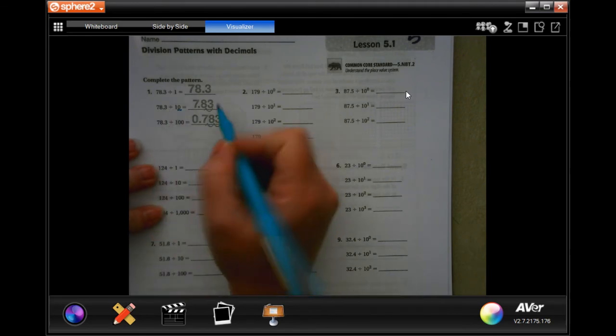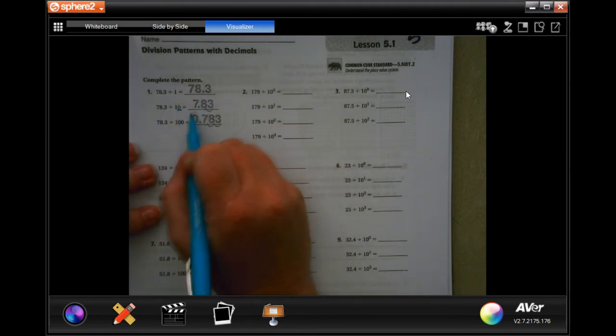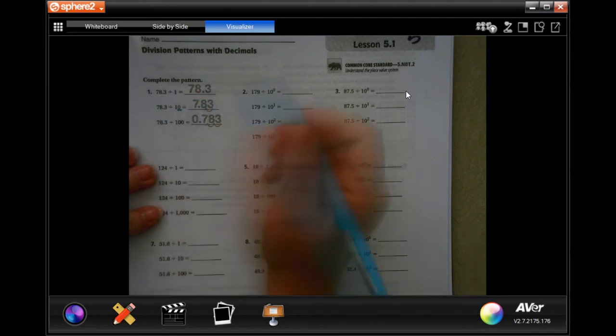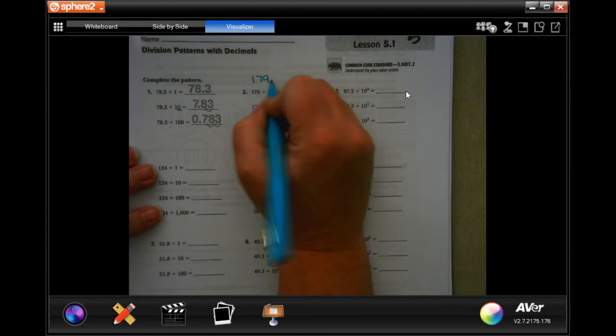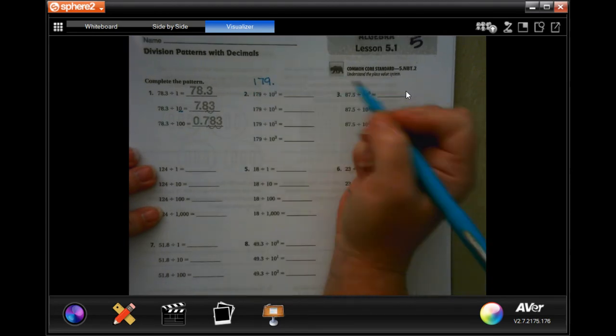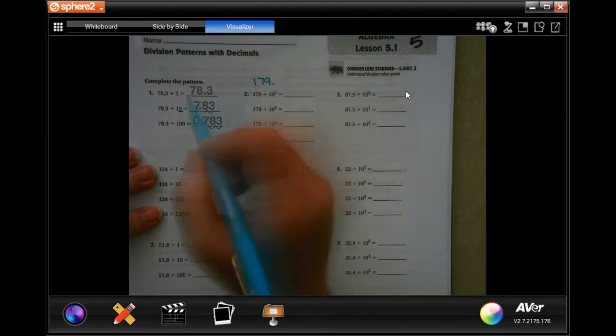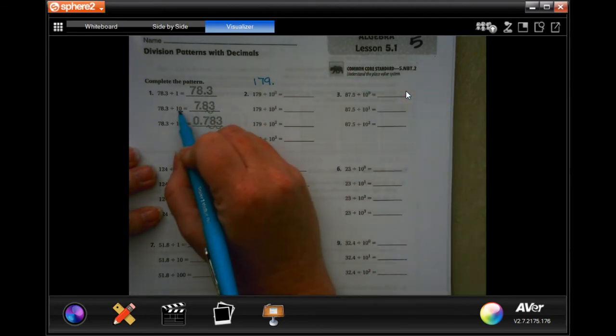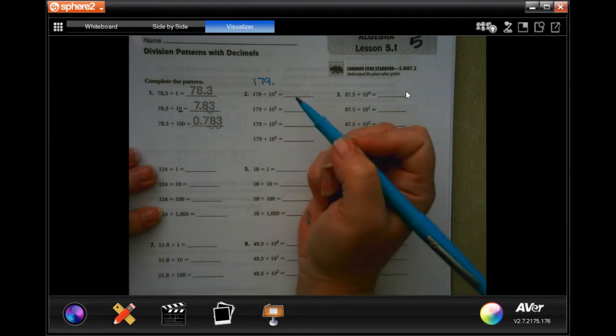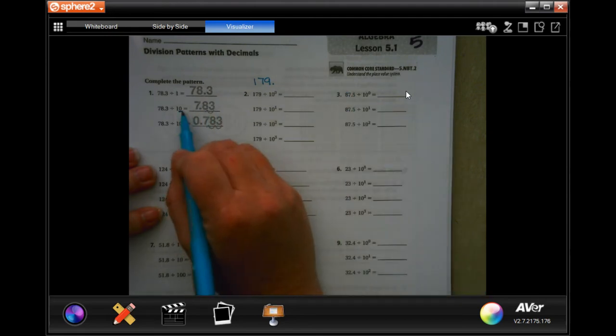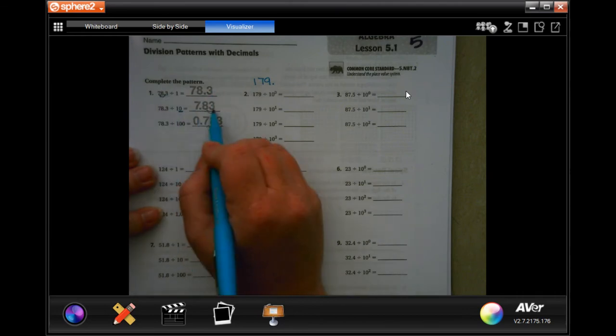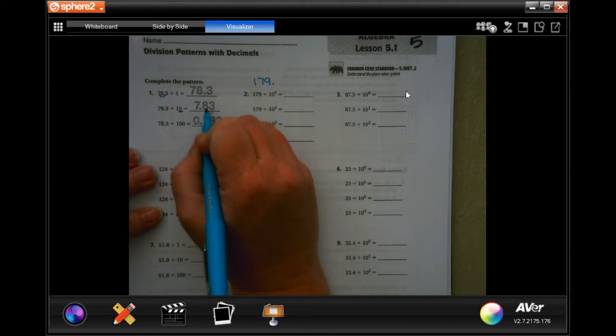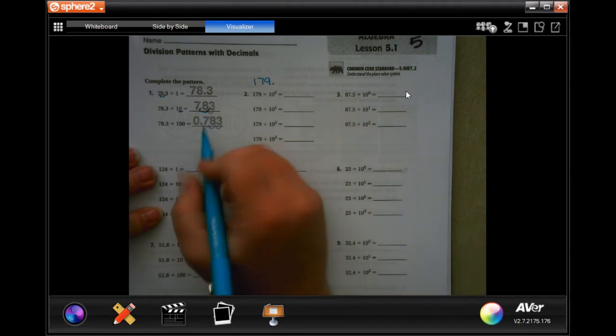So if the numbers start, then you assume that the number is going to, at the end, typically, so this would be 179 point. The decimal would be at the end if we had a decimal. So every time there's a zero, we're going to move the decimal one place. So because there's one decimal here, we would move it one place, 7.83. So instead of being after the 8, we would move it once to after the 7.